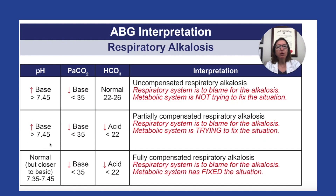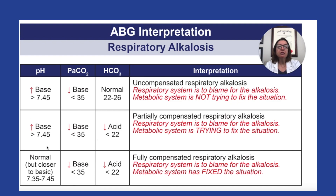In the second row, if our pH is over 7.45, we again have alkalosis. Our PaCO2 is low, under 35, so we know we have respiratory alkalosis. But bicarb is under 22, which means it's acidic — it is trying to compensate for this respiratory alkalosis by becoming more acidic. Has it fully compensated? No, because our pH is still out of range, still over 7.45. So here we have partially compensated respiratory alkalosis. The metabolic system is trying to compensate but has not fully compensated because the pH is not within normal range.